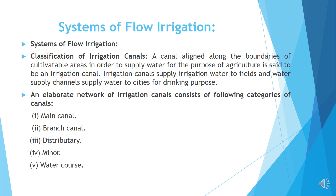The systems of flow irrigation. Classification of irrigation canals. A canal aligned along the boundaries of cultivable areas in order to supply water for the purpose of agriculture is said to be an irrigation canal. Irrigation canals supply irrigation water to fields, and water supply channels supply water to cities for drinking purposes. An elaborate network of irrigation canals consists of the following categories.